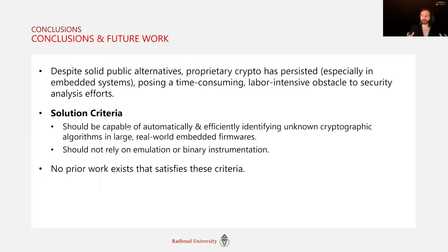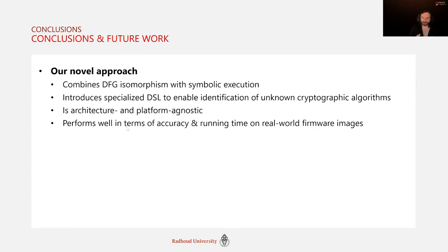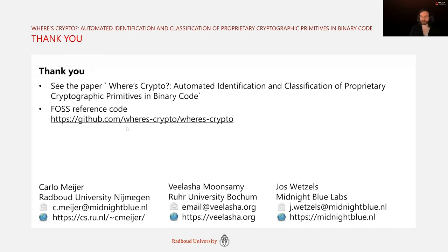In conclusion, proprietary cryptography usage in embedded binaries continues to persist and pose a problem to security analysis. Any solution should be capable of automatically and efficiently identifying unknown cryptographic algorithms without relying on emulation or binary instrumentation — and to our knowledge no prior work existed satisfying those criteria. We propose a platform- and architecture-agnostic solution combining DFG isomorphism with symbolic execution, operating on a custom DSL to identify unknown cryptographic algorithms. Our proof-of-concept performed well in accuracy and running time against relevant targets. More details are available in the paper, the reference code, or by contacting us via email.